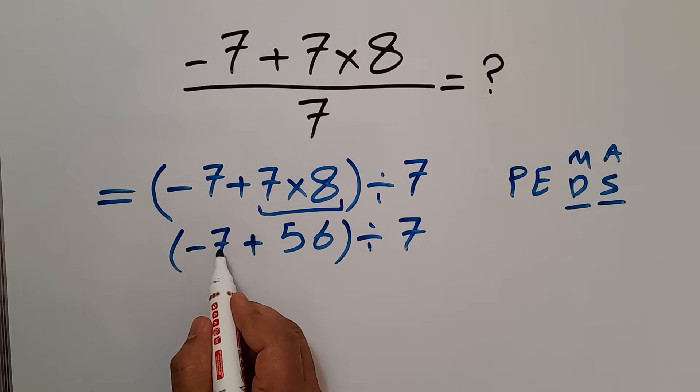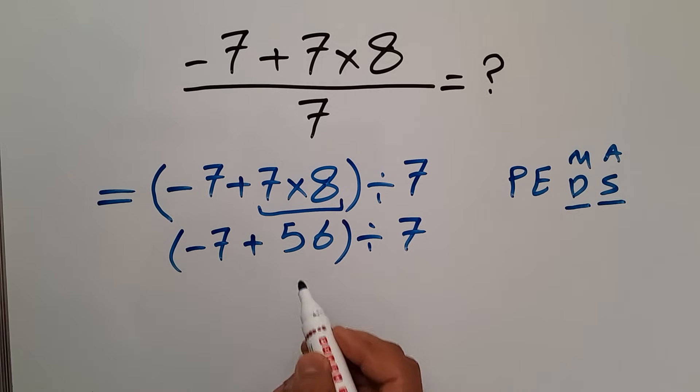Now, negative 7 plus 56 equals 49, so we have 49 divided by 7.